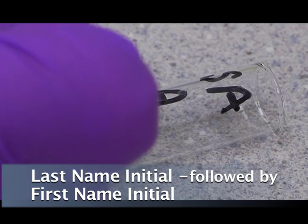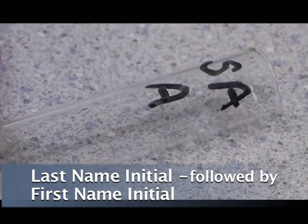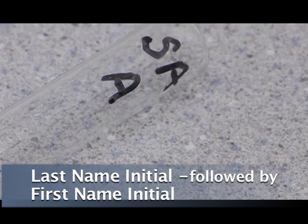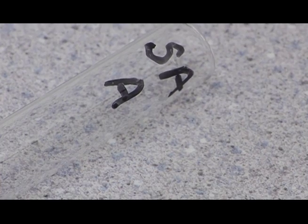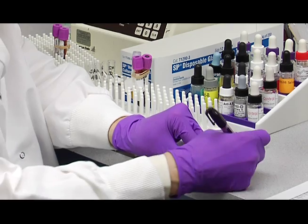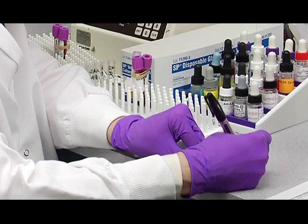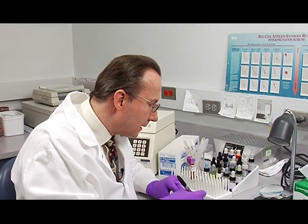And so we're always going to put the first initial last. The last initial of the last name goes first. So we're going to put S-A and then a capital A with a forward slash, B.